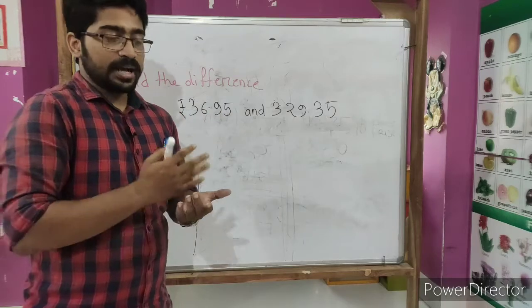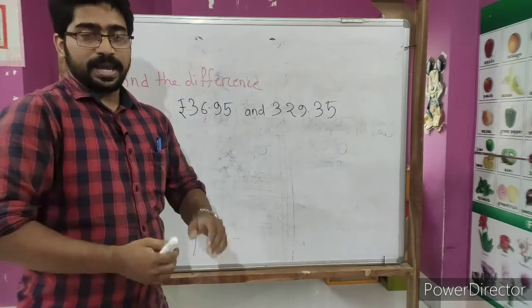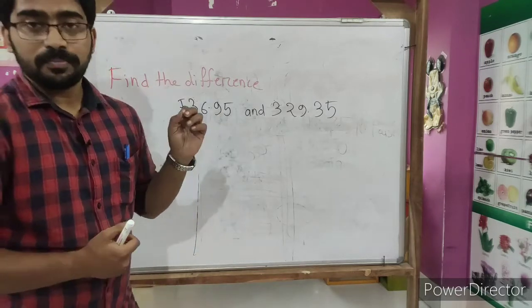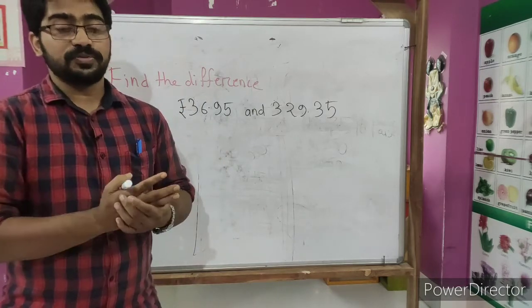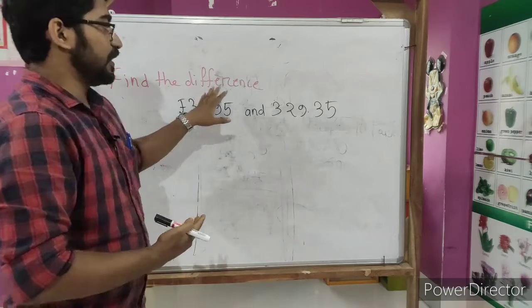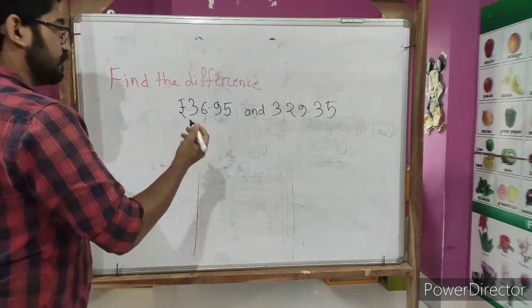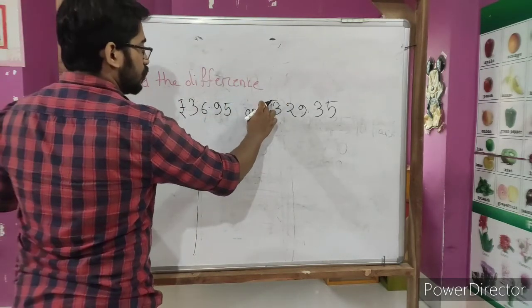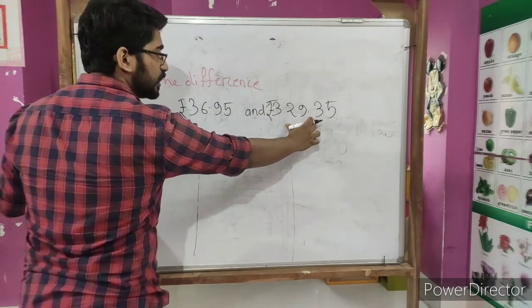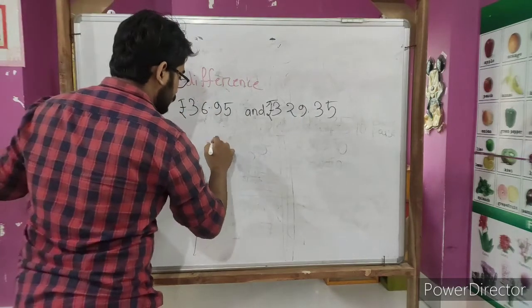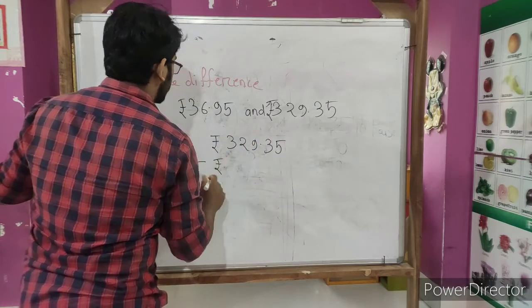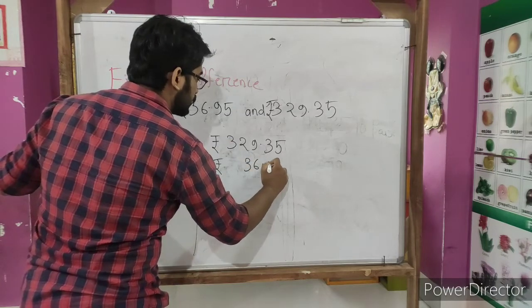Find the difference. So the answer which comes from addition we call it sum, and which comes from subtraction we call it difference, and which comes from multiplication we call it product, and which comes from division we call it quotient. So now we need to find the difference, that means we need to subtract and find out the answer. So simply we will write - one thing is missing here - yes, we need to find the difference between rupees 329.35 and rupees 36.95. So simply we will write the greater number at first: 329.35 minus rupees 36.95.